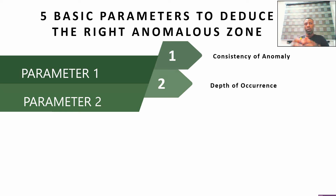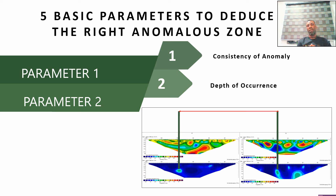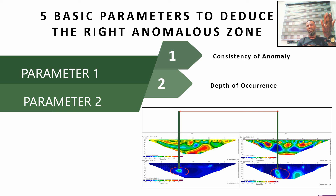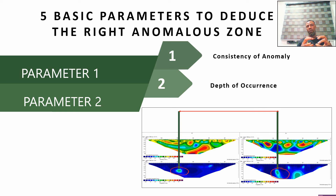The second parameter is the depth of occurrence — what depth are you observing the anomalous body? In a particular line, are you seeing the same anomaly occurring at the same depth in other lines? There should be some uniformity and consistency. You can see an anomaly at 10 meters, another at 80 meters, and another at 15 meters — so you must identify the top, bottom, and center of your anomaly across all sections.